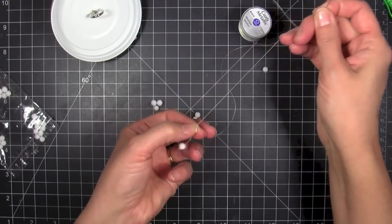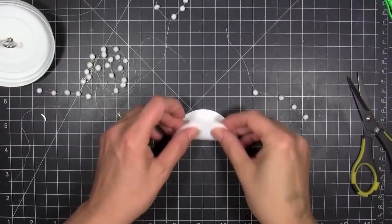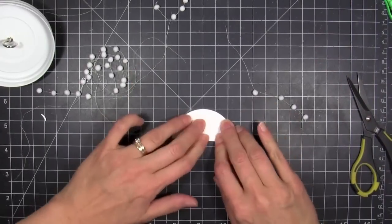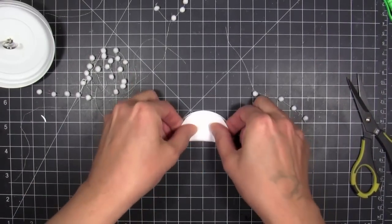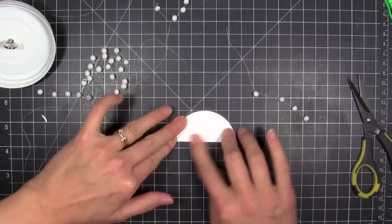That helps keep them in place so they can slide still a little bit if you need to position them, but they're not just going to fall down on the thread if you loop through them twice.